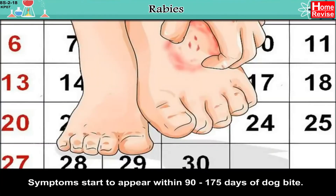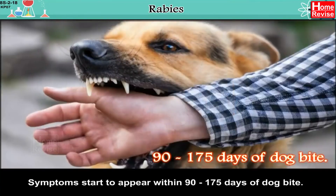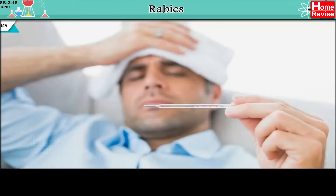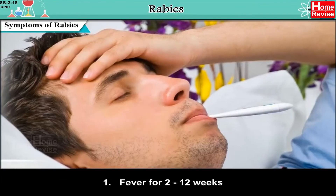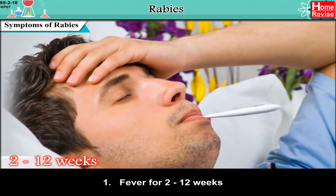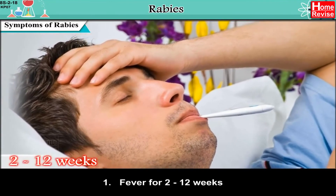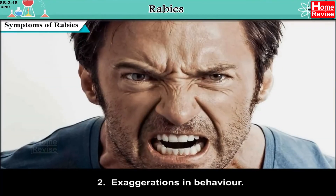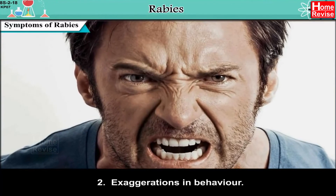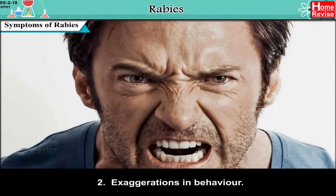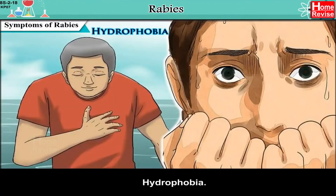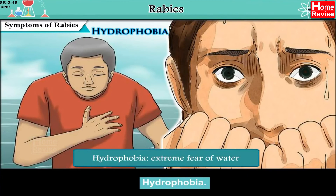Symptoms of rabies start to appear within 90 to 175 days of a dog bite. Symptoms include: one, fever for 2 to 12 weeks; two, exaggerations in behavior; three, hydrophobia, meaning extreme fear of water.